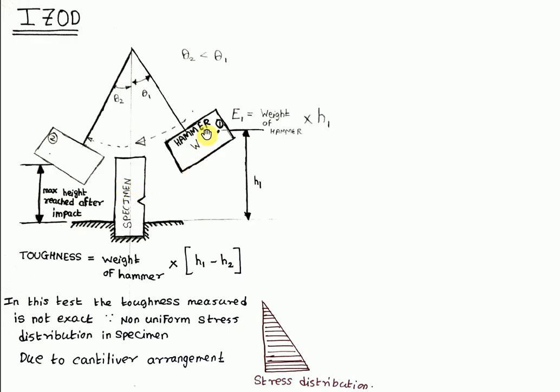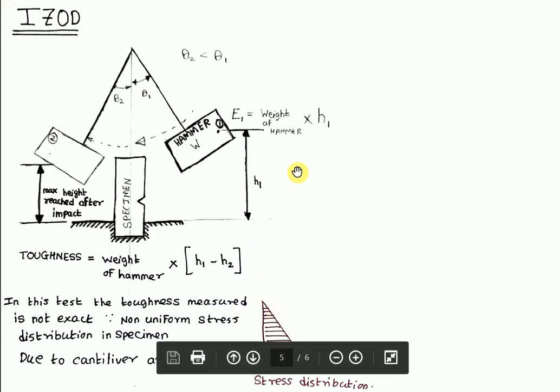After hitting the specimen, the hammer rises to a maximum height h2, and the toughness of the specimen is given by weight of the hammer times (h1 minus h2). The main drawback of the Izod test is that the stress distribution is not uniform. The stress distribution can be seen at the bottom. So to get the accurate measurement of toughness, we require another test called Charpy test.